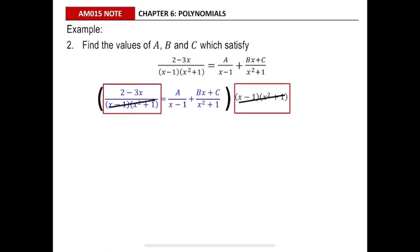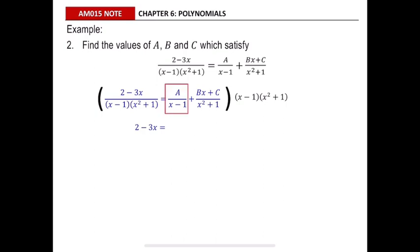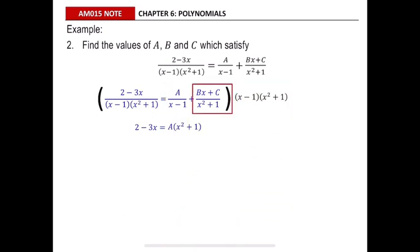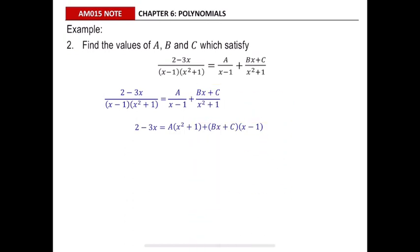Multiplying the left side first cancels the denominator and leaves 2 minus 3x. Then multiplying the first partial fraction cancels the x minus 1 and leaves A multiplied by x squared plus 1. Multiplying the last fraction cancels the x squared plus 1 and leaves Bx plus C multiplied by x minus 1.